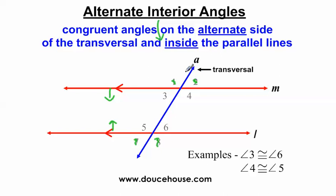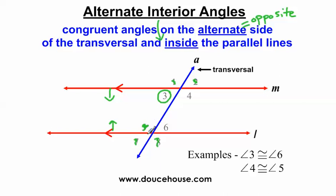Now, 'alternate side of the transversal' means we're looking for angles on opposite sides of the transversal. If you're having a hard time with the word alternate, think of the word opposite. If I focus on angle three, angles three and four are on opposite sides of the transversal. Angles three and six are on opposite sides of the transversal. Angles three and five are not on opposite sides of the transversal, so five is not going to be an alternate interior angle to three.